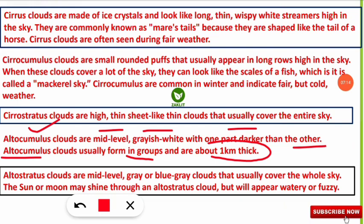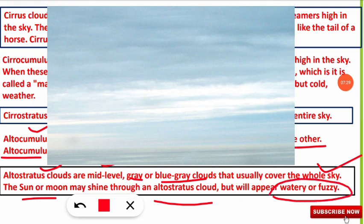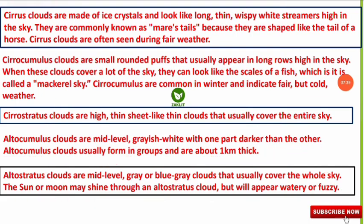Altostratus clouds are also mid-level clouds. They are gray or blue-gray clouds that usually cover the whole sky. The sun or moon may shine through an altostratus cloud, but it will appear watery or fuzzy when looking through it.